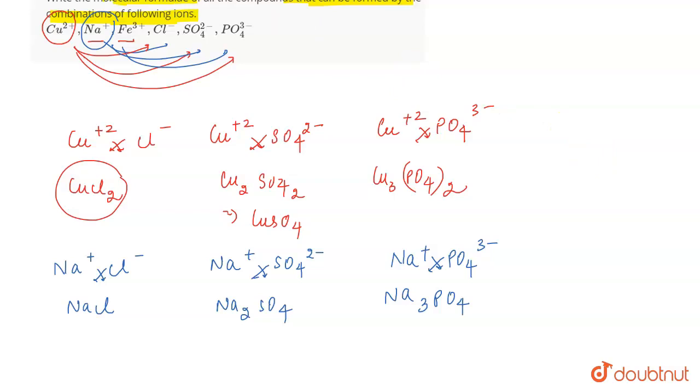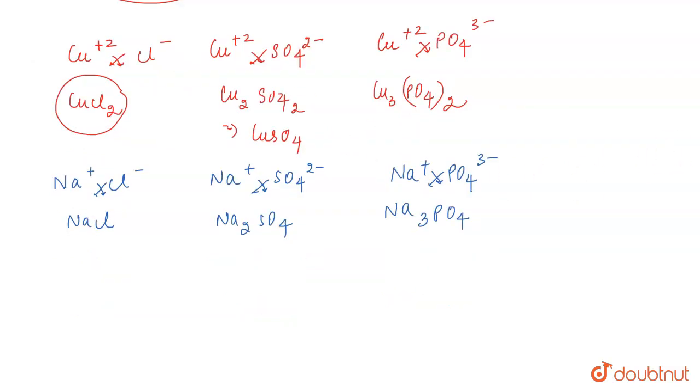Now for the next set of formulas, we are going to consider Fe plus 3 along with each of the anions. So now you have Fe plus 3 and then Cl negative. So the formula will be FeCl3. Again you have Fe plus 3 with SO4 2 negative. So you will get Fe2SO4 thrice.